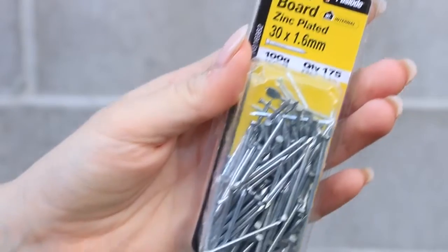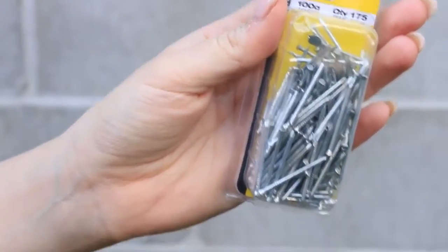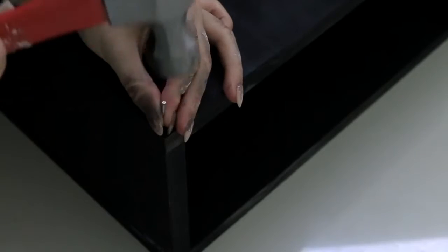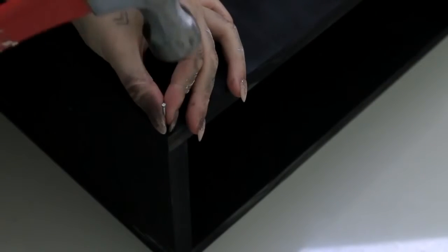Once the liquid nails is dried I'm going to take 30 millimeter nails and just hammer them through to hold everything in place. So you can see that's the length that we need to make sure that it goes into the second piece properly. So I'm going to put three along each join.